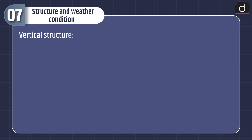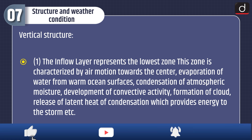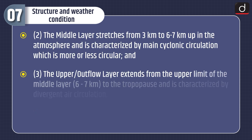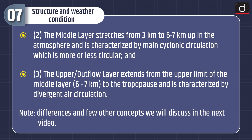In terms of vertical structure: the inflow layer represents the lowest zone, characterized by air motion towards the center, evaporation of water from warm ocean surfaces, condensation of atmospheric moisture, development of convective activity, formation of cloud, and release of latent heat of condensation which provides energy to the storm. The middle layer stretches from 3 km to 6–7 km up in the atmosphere and is characterized by main cyclonic circulation which is more or less circular. The upper or outflow layer extends from 6–7 km to the tropopause and is characterized by divergent air circulation.